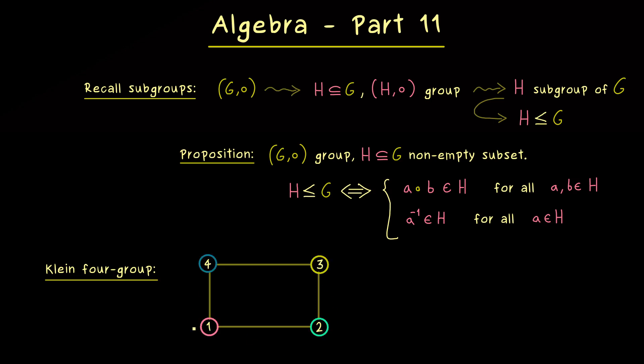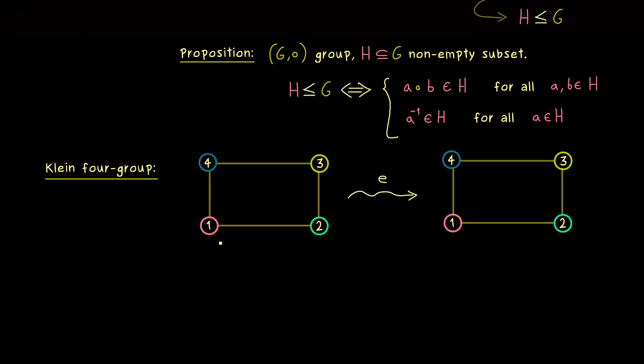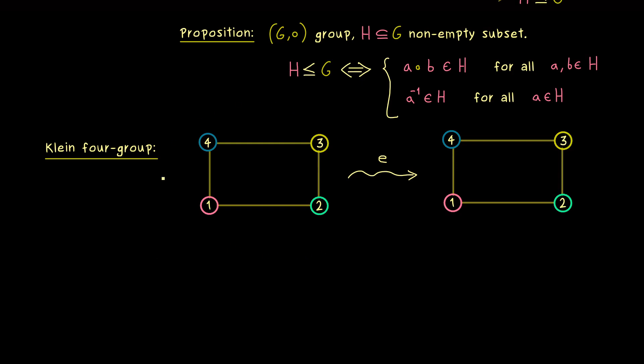At this point you already know how it works. The symmetry operations give us the elements of our group. For example, the identity element E just does not do anything to the rectangle. However, we can definitely do more. For example, we could rotate the whole rectangle by 180 degrees. Let's call this element A.